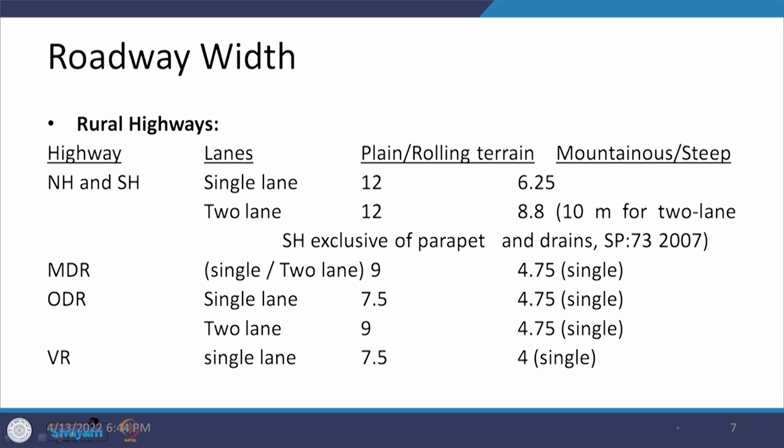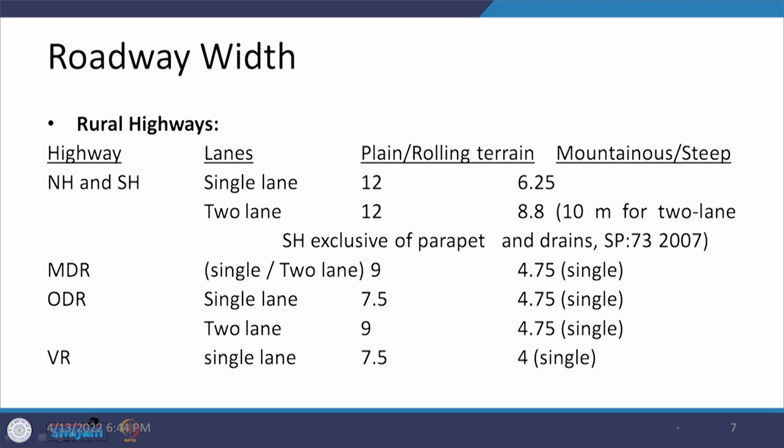For a two-lane state highway on mountainous and steep terrain, SP 73 defines 10 meters width, exclusive of parapets and drains. For MDR, the width is 9 meters for plain and rolling terrain and 4.75 meters for mountainous and steep. For ODR it is 7.5 or 9 meters for plain and rolling; for village roads it is a minimum of 4 meters for single lane in mountainous terrain and 7.5 meters in plain and rolling terrain, meaning a good amount of shoulder is provided on either side.